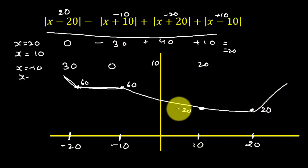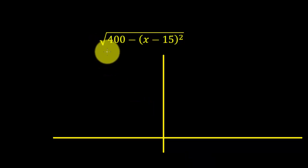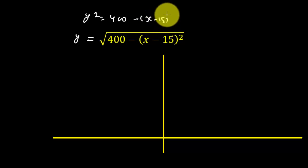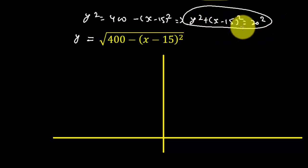Now we need to plot the graph of another function. We have this function. Whenever we have a function, we will say this is y. So we can say y squared is equal to 400 minus (x minus 15) whole squared. This is y squared plus (x minus 15) squared equals 400.